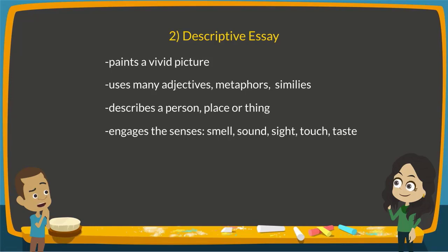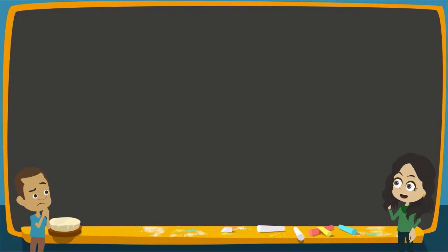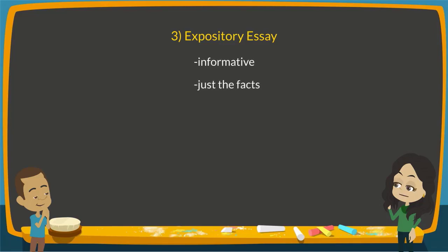But I don't want to describe one thing in so much detail — I want my essay to be more informative. Well, the third type of essay is an expository essay. This is an informative piece of writing that includes only the facts, meaning it doesn't include the opinions or emotions of the author.